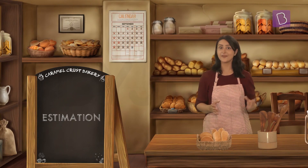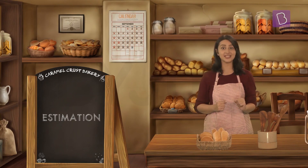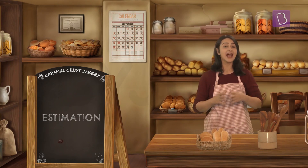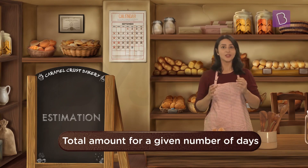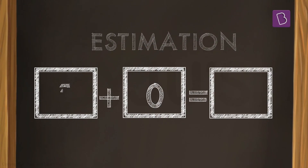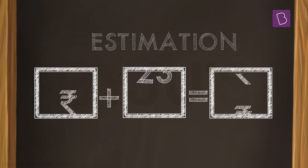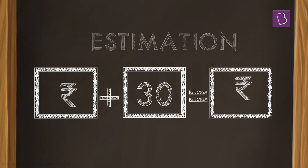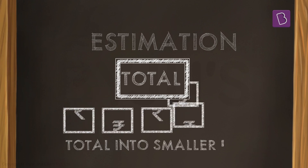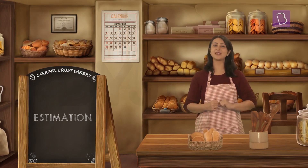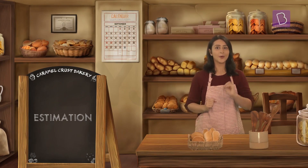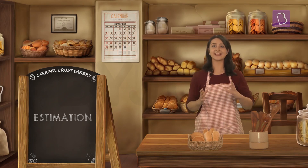Estimation helps me save a particular amount every day. Using this estimation I can get a total amount for a given number of days. Estimation can be used for any number of days or for different amounts. Also, estimation helped me calculate a certain amount of money by breaking up the total into smaller bits, which gave me the answer of saving 20 rupees per day.